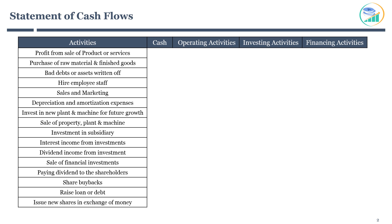Depending on the type of business activity, cash can leave or enter the company. Let's start with the first activity: profit from the sale of products or services. This activity is related to core business operations. When the sale is done on cash, it will bring cash into the company. This will be recorded as operating activities.